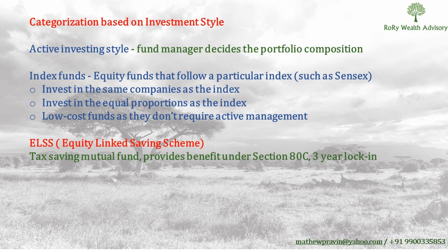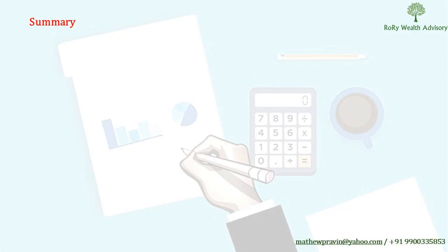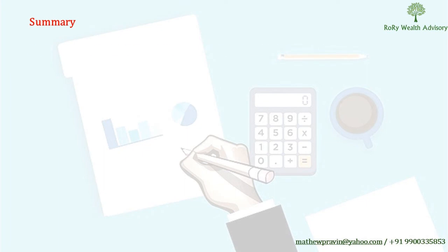Last but not least, there are Equity Linked Savings Scheme (ELSS) mutual funds, which are tax-saving mutual funds under Section 80C. They have a three-year lock-in period — every investment you make is locked in for three years and cannot be taken out. Among all tax-saving instruments, ELSS has the lowest lock-in, but being a mutual fund it has a higher degree of risk involved.